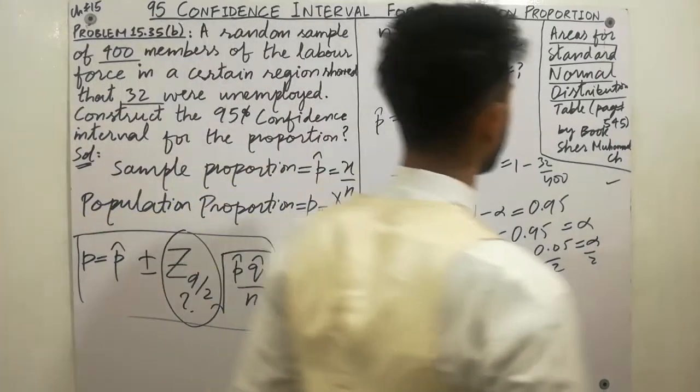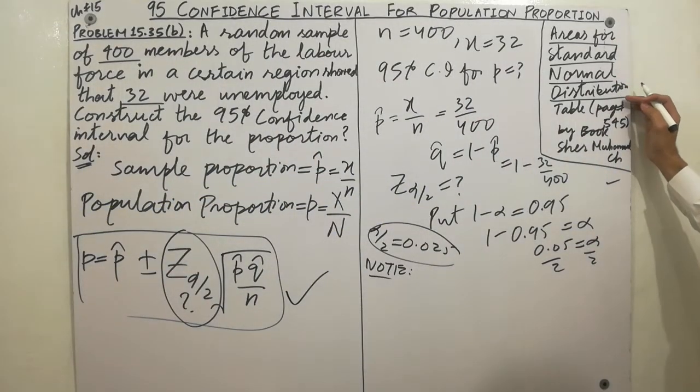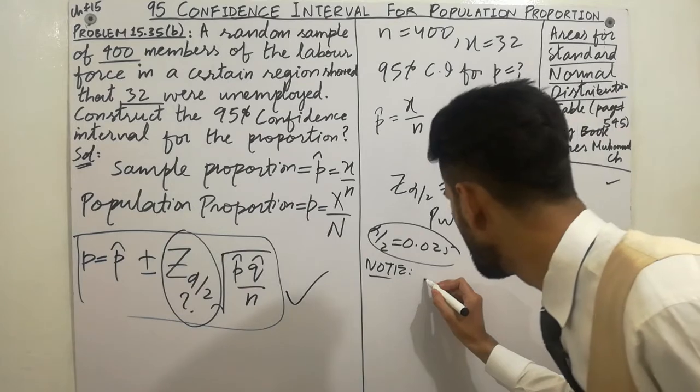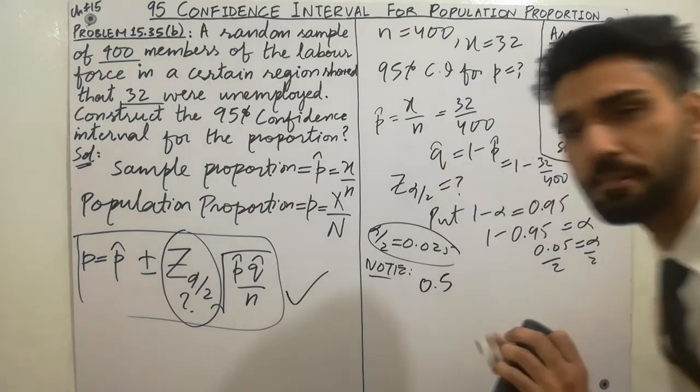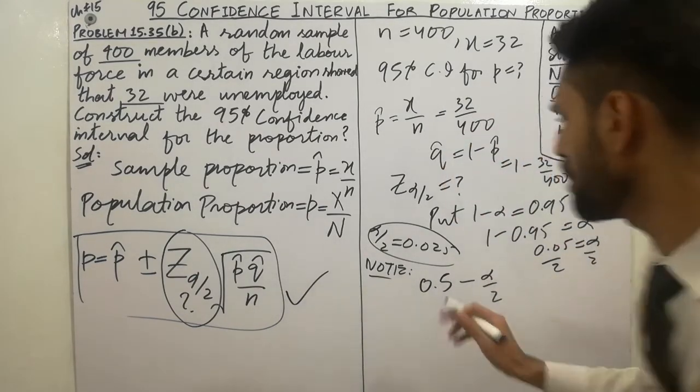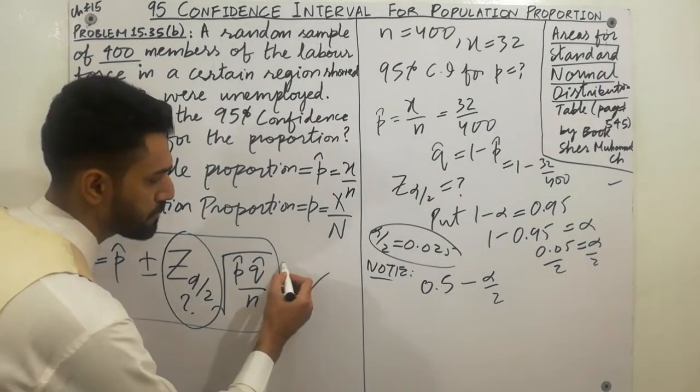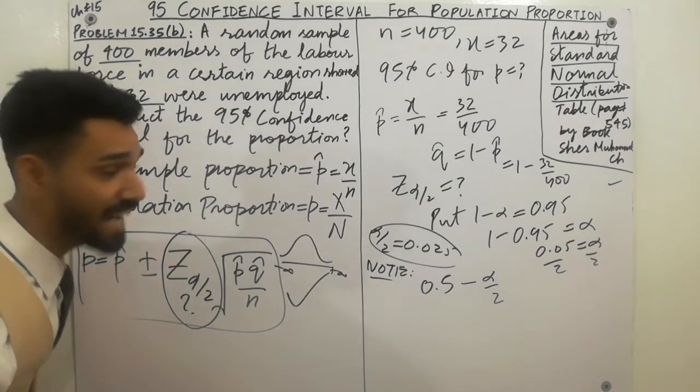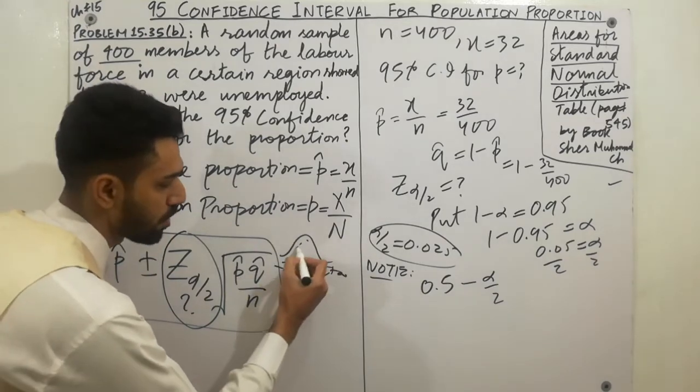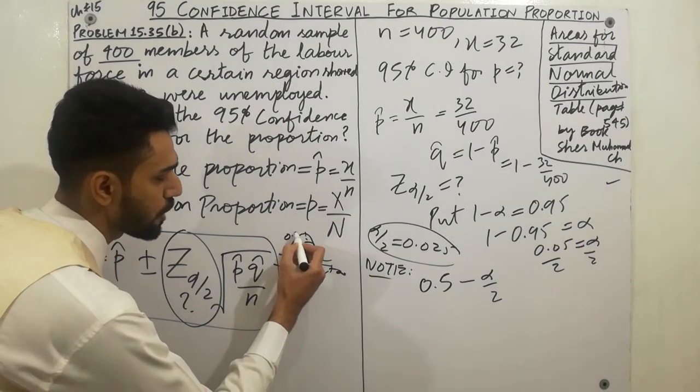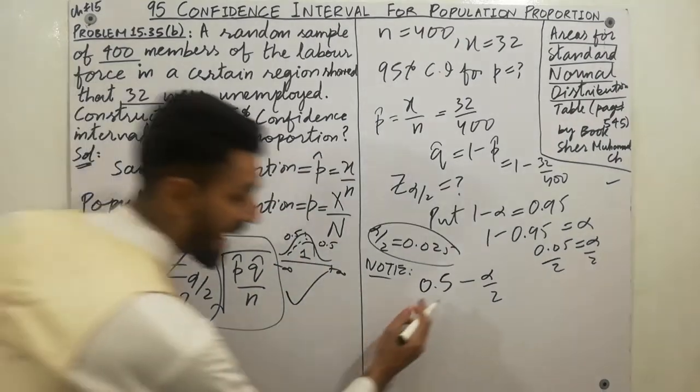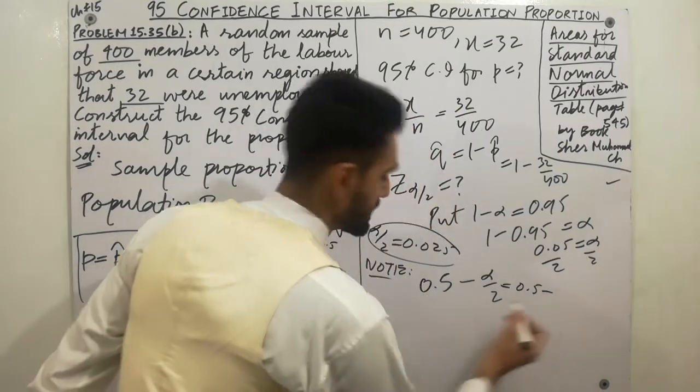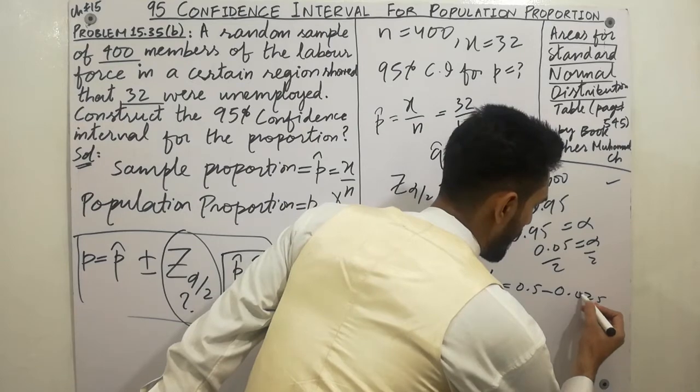Very simply you have to use the area under standard normal distribution table which is available in your book. Simply 0.5 minus alpha by 2. You know that the normal distribution shape is like this - normal distribution range is minus infinity to plus infinity. Total normal curve is 1 - this side is 0.5 and this side is 0.5. So 0.5 minus alpha by 2, which is given here as 0.025.